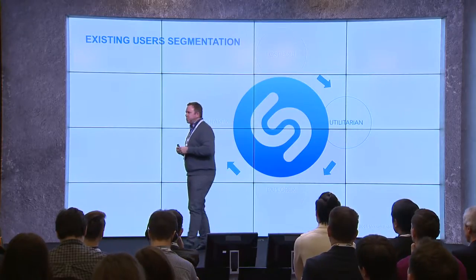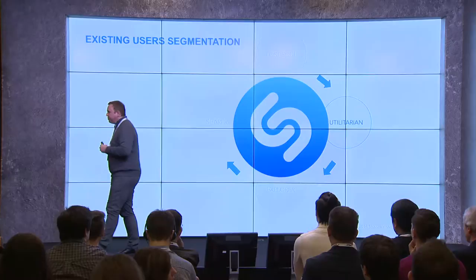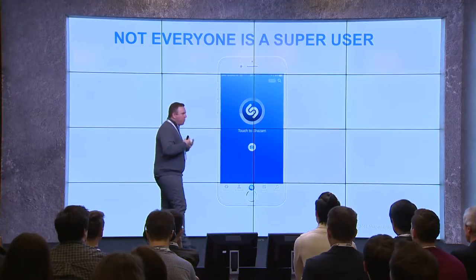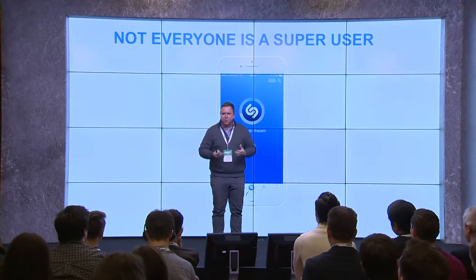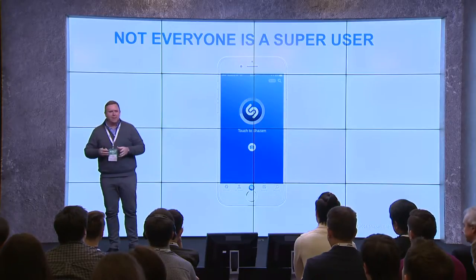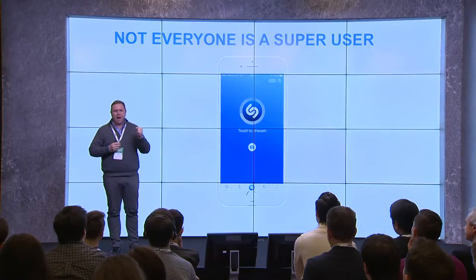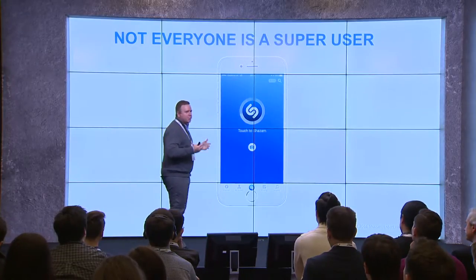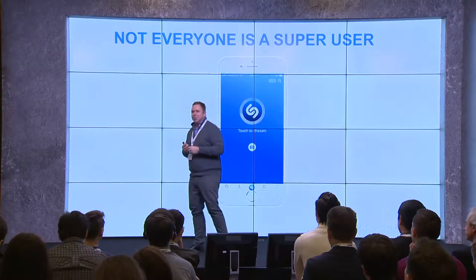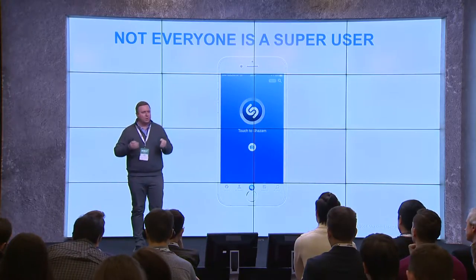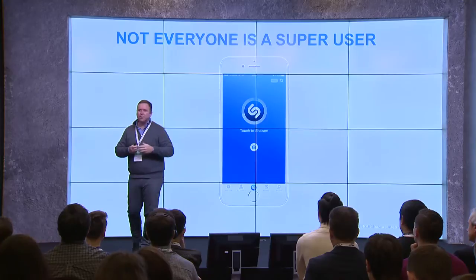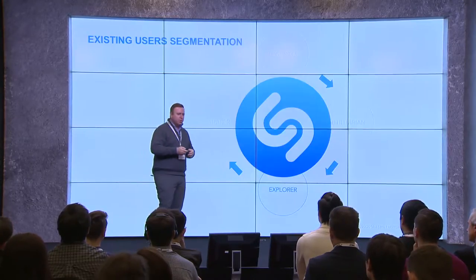The next bucket of users is what we call the 'utilitarian' — essentially a utility user. A lot of people worry when they create an app that they want to create a super user who comes every couple of hours. The reality is that's very rare. So be happy to have someone who comes to your app once or twice a week or even once or twice a month — it's not a bad thing. What you need to figure out is how to get them to come more often. That's where your product features and continued innovation will hopefully drive that utilitarian user to what we call an 'explorer.'